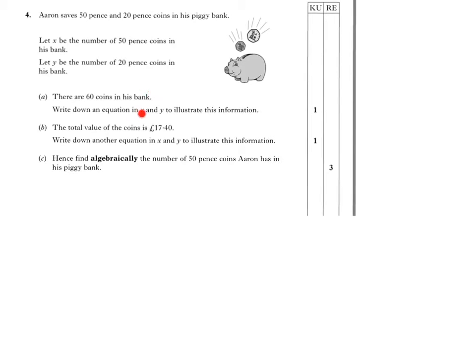Part A: Altogether there's 60 coins in the bank. One mark to get going. Write down an equation in x and y to illustrate this information. Pretty straightforward. There's an x number of 50p coins, there's a y number of 20p coins, there's no other coins involved. If there's 60 coins in total, that means if you've got x number of coins plus y number of coins, they must total up to 60 coins. And that's equation 1.